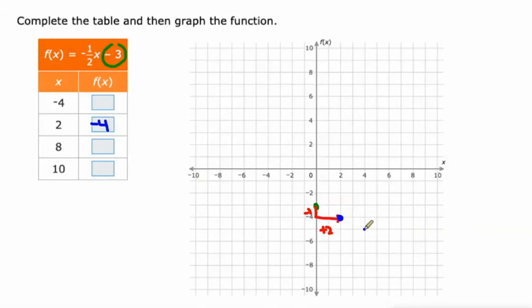And we go down another 1, over 2. Down 1, over 2. Down 1, over 2. Down 1, over 2. And let's go ahead and draw our line in there now.